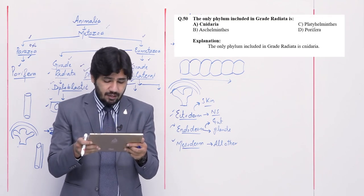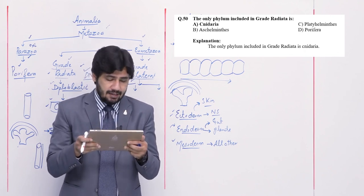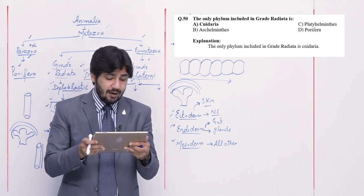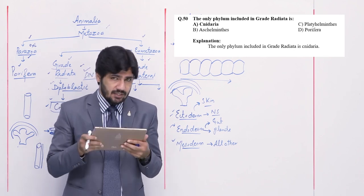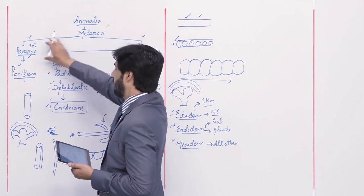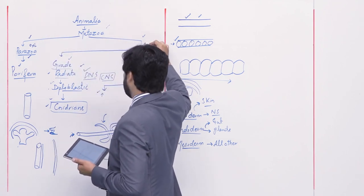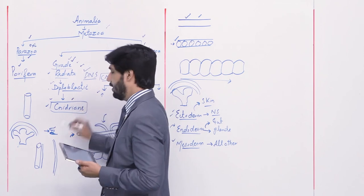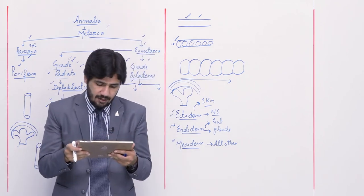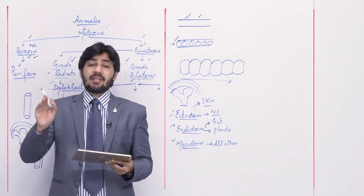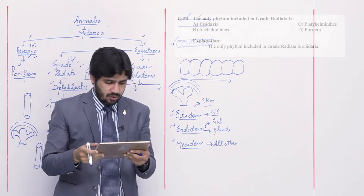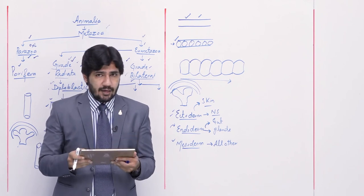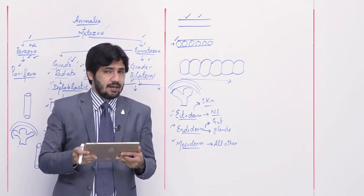Question number 50: the only phylum included in grade Radiata is — alpha Nideria, beta Ashhelminthes, charlie Platyhelminthes, and delta Porifera. At the start, animals in metazoa are classified into Parazoa and Eumetazoa. Within Eumetazoa, grade Radiata and grade Bilateral. Only one phylum comes under grade Radiata — that is phylum Nideria. Porifera is in Parazoa; all remaining phyla are within grade Bilateral. Right option is alpha. With this, our discussion ends. Best of luck for your test. Allah hafiz.